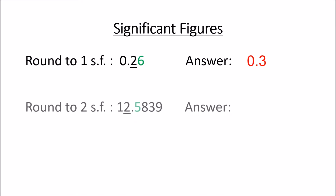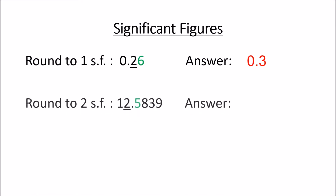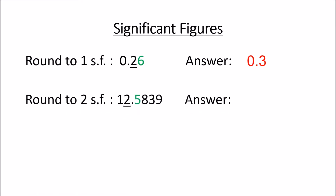Round to two significant figures: 12.5839. So you're looking at the first two digits — 1 and 2. There's a 5 after the 2, so you add a 1 to the 2, making it a 3. So the answer is 13.